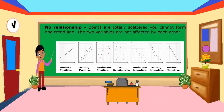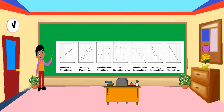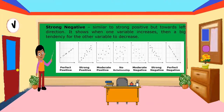For no relationship, points are totally scattered and you cannot form one trend line — the variables are not affected by each other. Moderate negative shows an inverse relationship: when one variable increases, there is a tendency for the other variable to decrease and vice versa. Strong negative is similar to strong positive but towards the left direction — when one variable increases, there is a big tendency for the other variable to decrease.